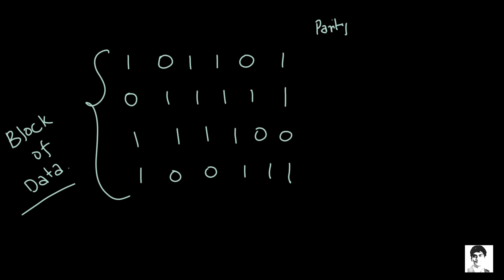And let us say I'm using odd parity. In the first row I have four ones so I'll give this a one so it's five. The second row I have five so I'll give it a zero. The third row has four so I'll give this a one. The fourth row has four again and I will give this a one. So this is called the parity column.